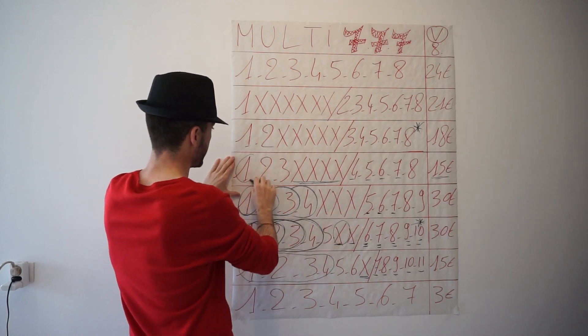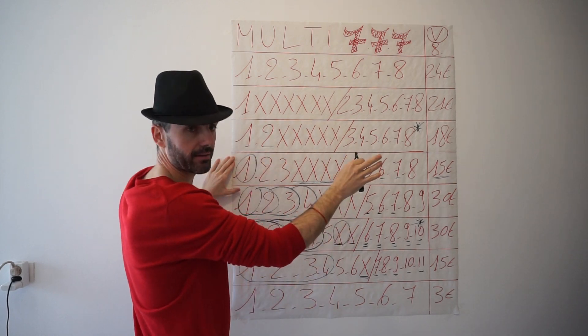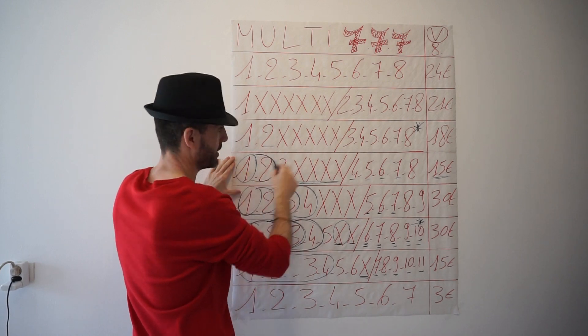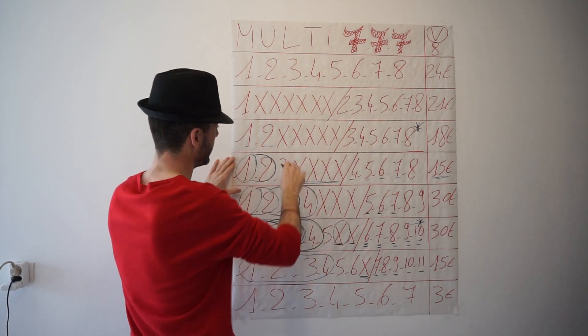Maintenant si nous avons un de base et trois derrière, on touche le multi. Deux de base et deux derrière, plusieurs fois. Et trois de base plus ce soit de derrière, aussi plusieurs fois.